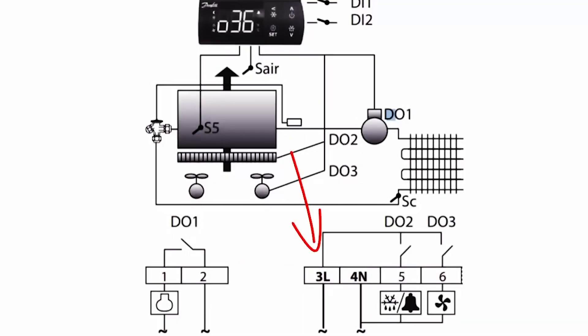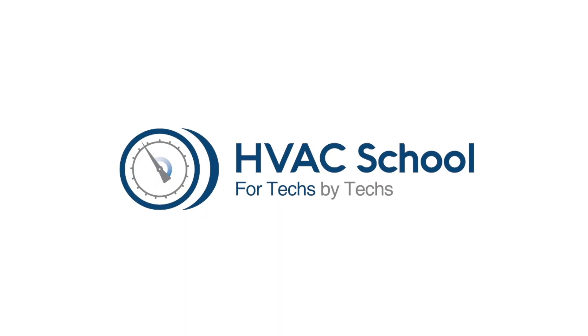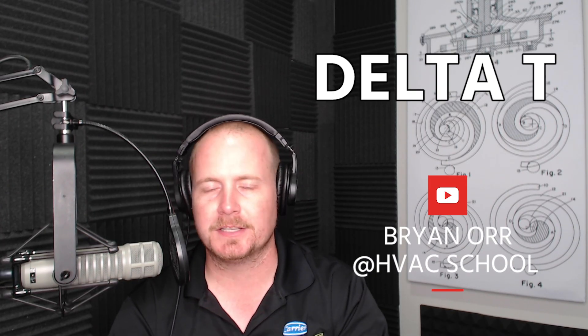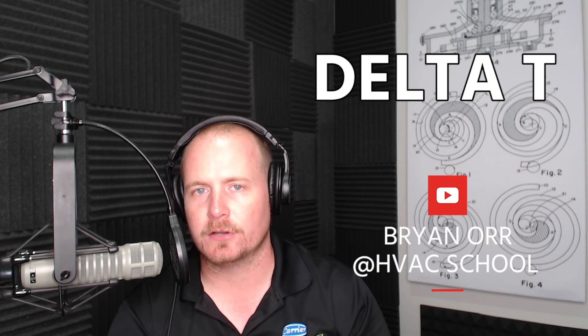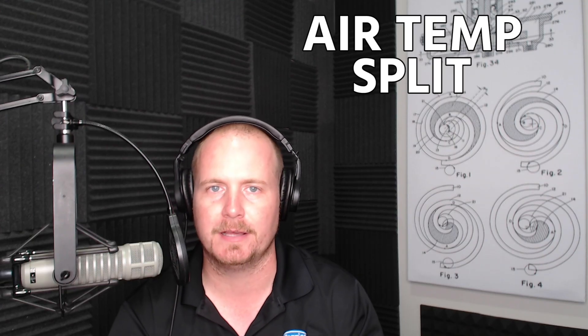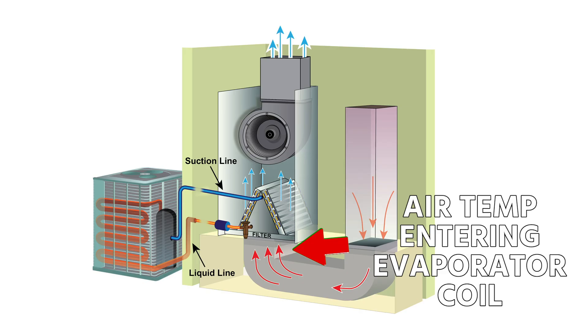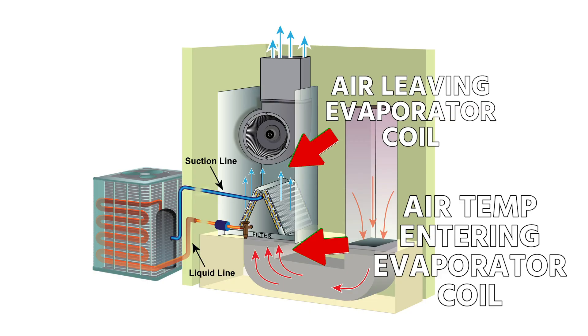This video is all about delta T. Delta T isn't always called delta T — it's often called an air temp split, an air temperature split, or just a temperature split. It's the difference between the air temperature entering the evaporator coil and the air leaving the top of the coil.